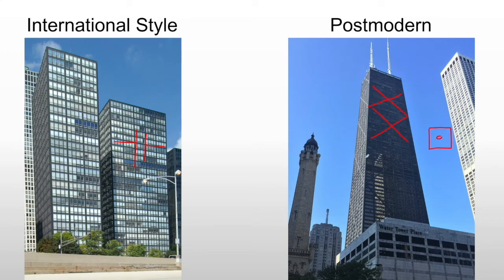Also, the shape of the building — you'll notice it's not just a rectangle. It kind of sweeps up to a narrower top, reminiscent of pyramids, obelisks, any kind of tall ancient structure, bringing in that classical element that we talked about in postmodern architecture.